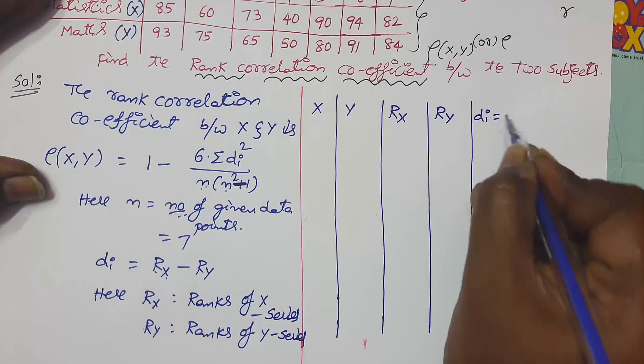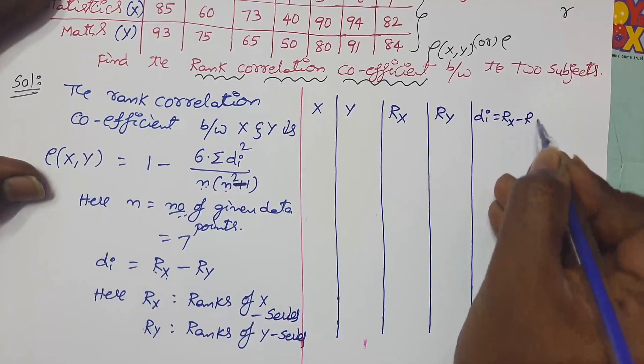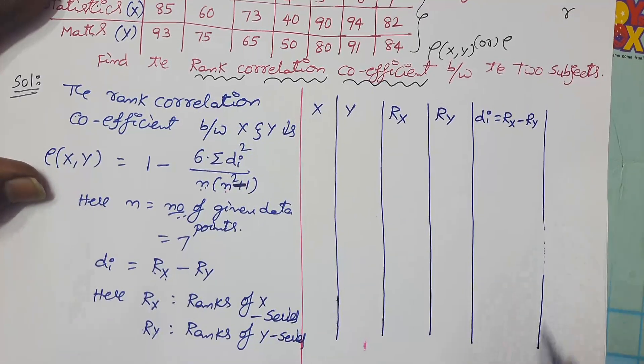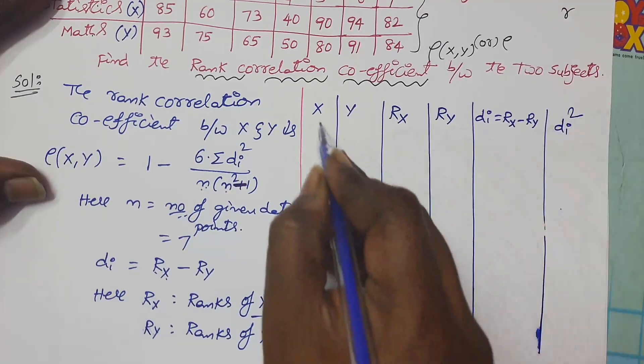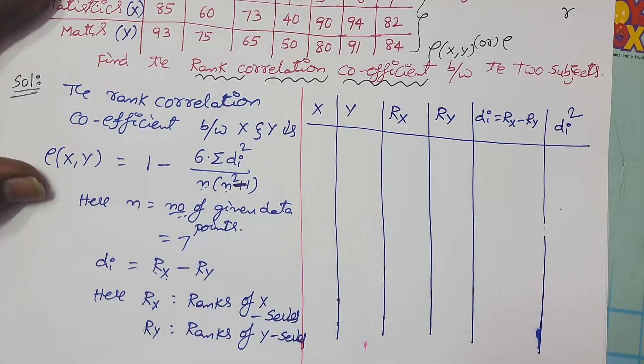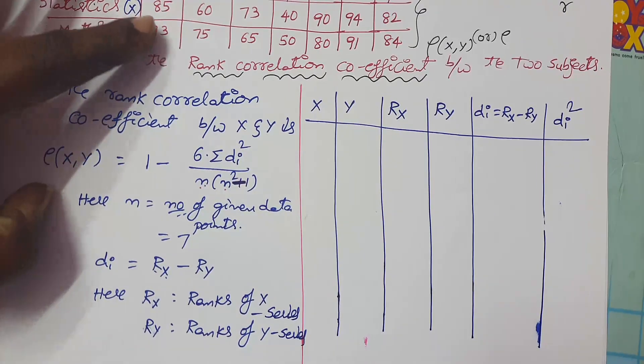Now Rx gives the ranks of x marks and Ry ranks of y marks, and di is nothing but Rx minus Ry, and finally squaring the di values. Write the x values in order.